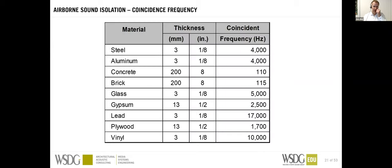These are coincidence frequencies for various materials. It is not advisable to sandwich materials with similar coincidence frequencies — say, 200 mm concrete and 200 mm brick. It increases weight so isolation improves on the curve, but because their coincidence frequencies are almost the same, you still get a very big drop at around 110–150 Hz. It's advisable to combine materials with very different coincidence frequencies.